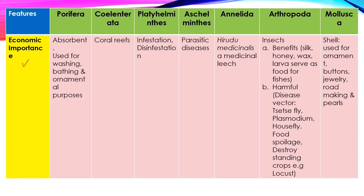Porifera sponges can be used as an absorbent. They are also used for washing, bathing, and ornamental purposes. Cnidaria — they act as coral reefs. Coral reefs provide homes for quite a few animals.